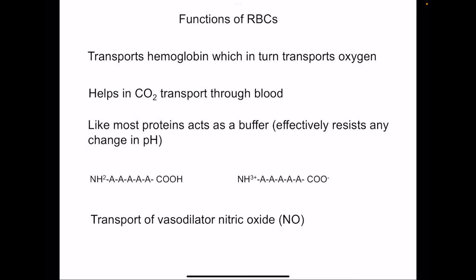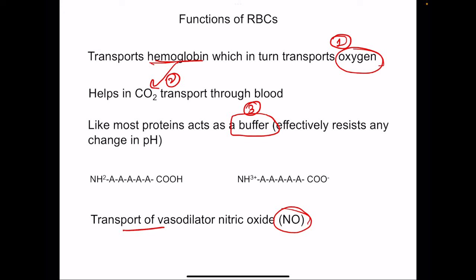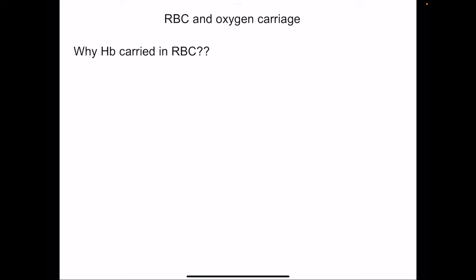The functions of RBCs are basically the same as the functions of hemoglobin. RBCs transport hemoglobin, which in turn transports oxygen and carbon dioxide. Since hemoglobin is a protein, it also acts as a buffer. RBCs also transport nitric oxide in the blood. The main function is to carry hemoglobin, but why is hemoglobin not directly present in circulation rather than enclosed in RBCs?